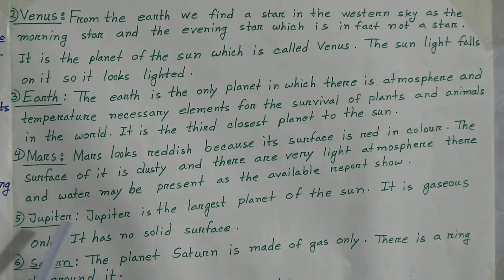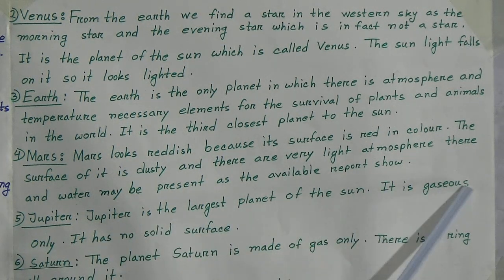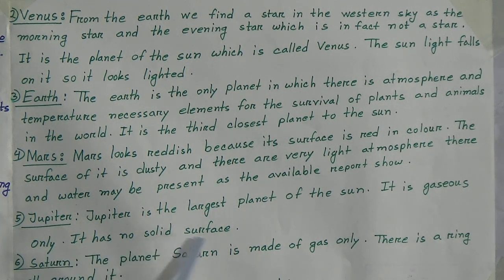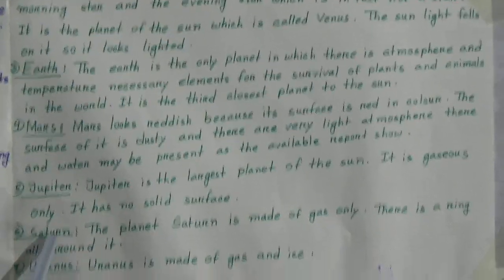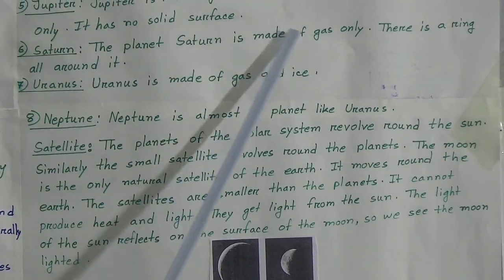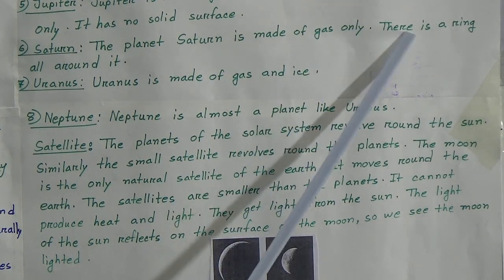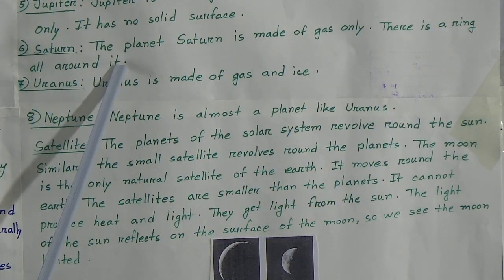Number 5: Jupiter. Jupiter is the largest planet of the solar system. It is gaseous only and has no solid surface. Number 6: Saturn. The planet Saturn is made of gas only and there is a ring all around it.